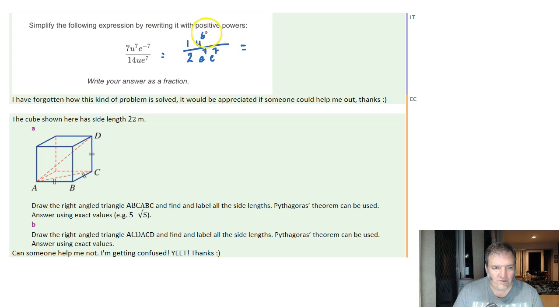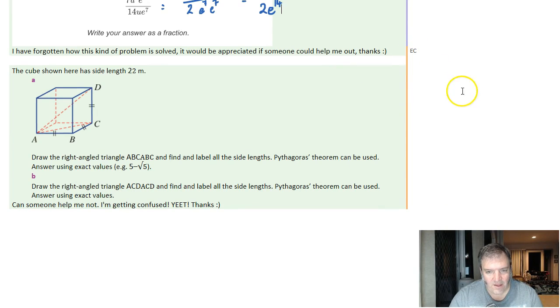Now you just neaten it up a little bit. 1 times U to the power of 6 is U to the power of 6. I've still got 2 on the bottom, and E to the 7 times E to the 7. Well, that'll be E to the 14.